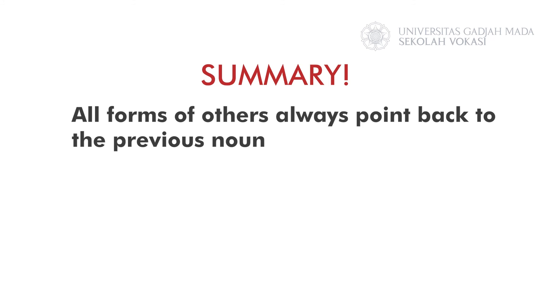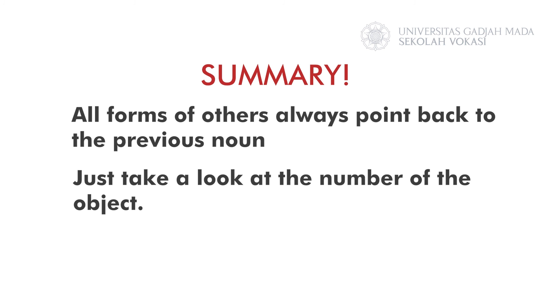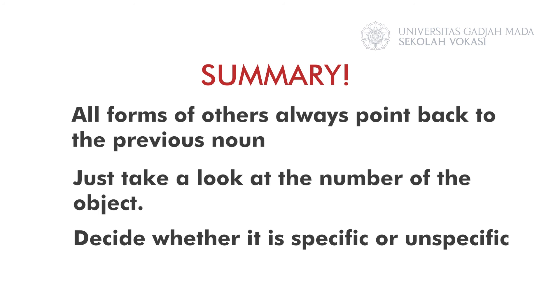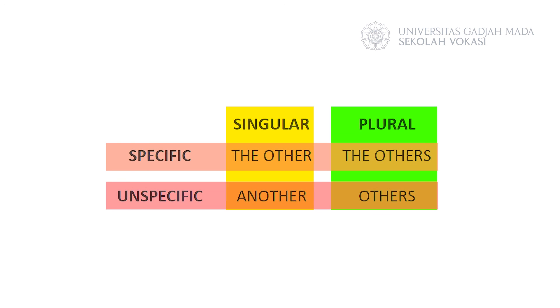Before we end this video, here's a review of what we discussed today. First, all forms of 'others' refer or point back to something already mentioned. Second, you just need to look at the number of the object and whether they are specific or unspecific. Here's a simple chart for you. I think that's all for now. Thank you guys for watching. Good luck with the exercises and see you in class.